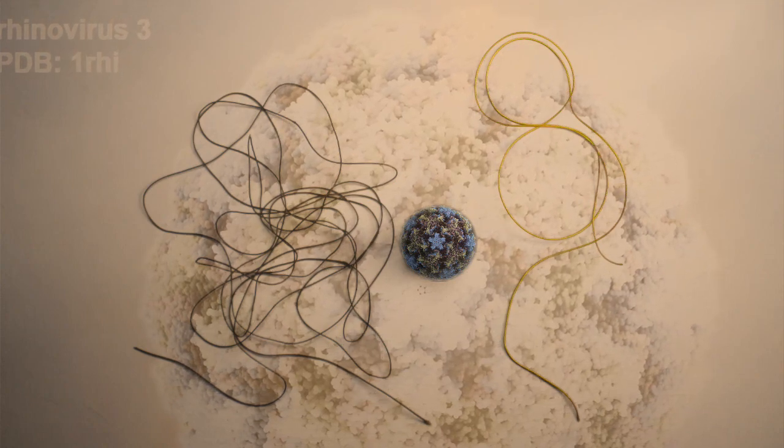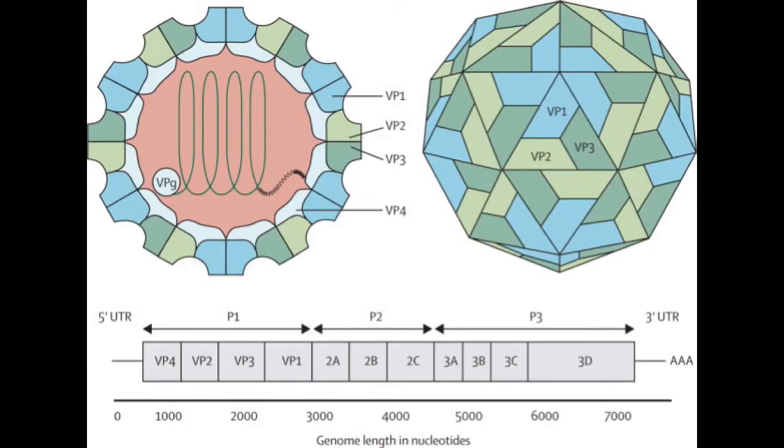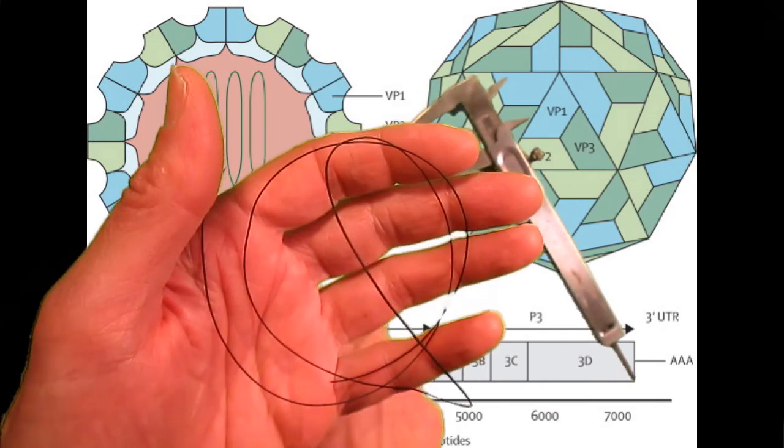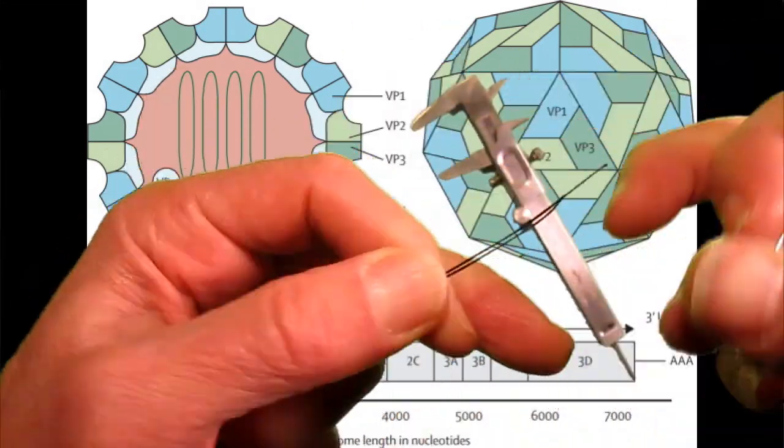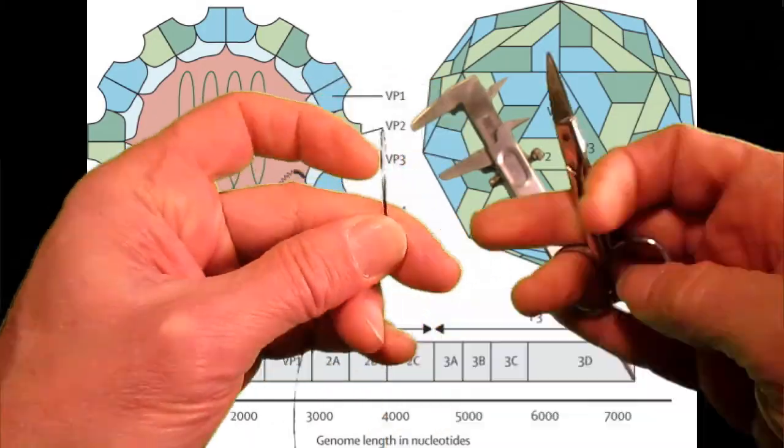Next, we need to cut this long protein strand into 11 segments, each with about 200 amino acids. The first four segments of each of the long strands build the shell. We model them with four colored strands.